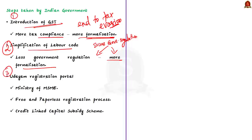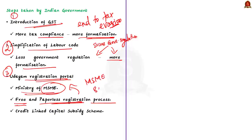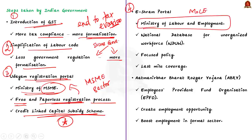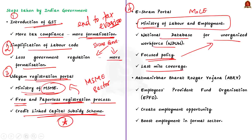Thirdly, take the Udyam registration portal. This portal is maintained by the Ministry of Micro, Small and Medium Enterprises, that is MSME. It offers a free and paperless registration process for the MSME sector. Units registered with the portal are eligible for the Credit-Linked Capital Subsidy Scheme, which will help in the formalization of the sector. Now take the e-Shram portal, developed and maintained by the Ministry of Labour and Employment. It will help create a national database of unorganized workers, and will also help ensure the last-mile coverage of government social security measures to the unorganized sector workforce.